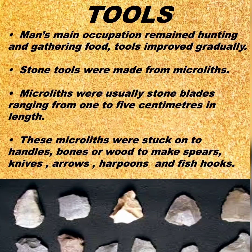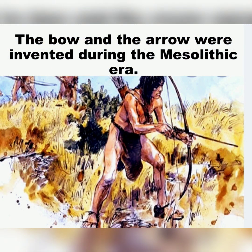Man's main occupation remained hunting and gathering food, and tools improved gradually. Stone tools were made from microliths — usually stone blades ranging from 1 to 5 cm in length. These microliths were stuck onto handles of bone or wood to make spears, knives, arrows, harpoons, and fish hooks. The bow and arrow were invented during the Mesolithic era.